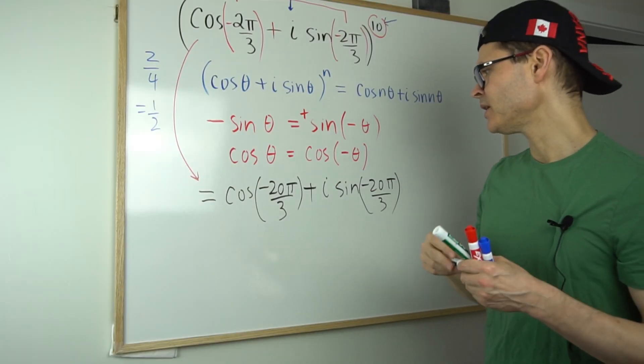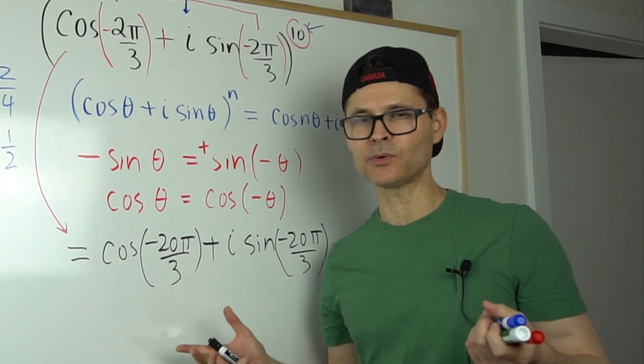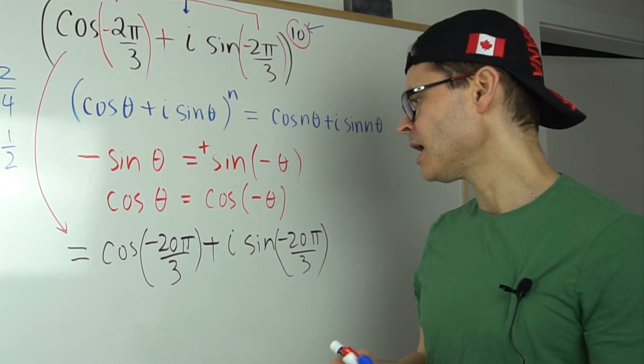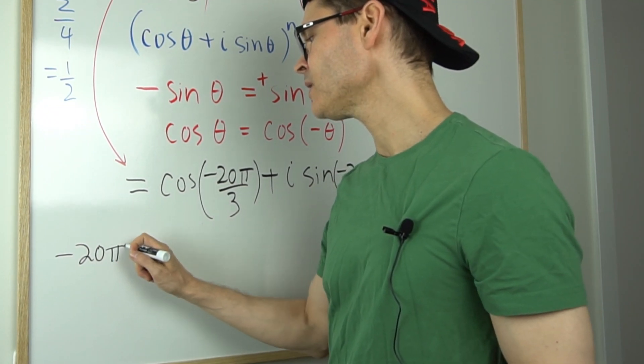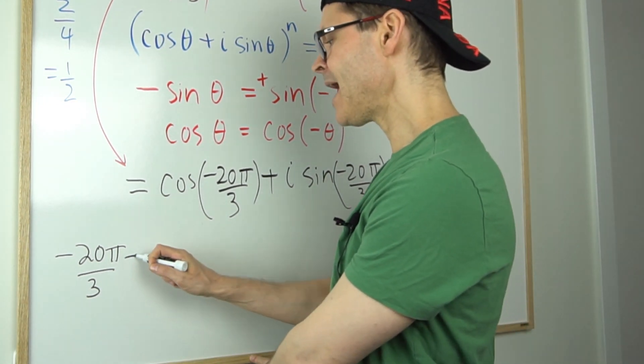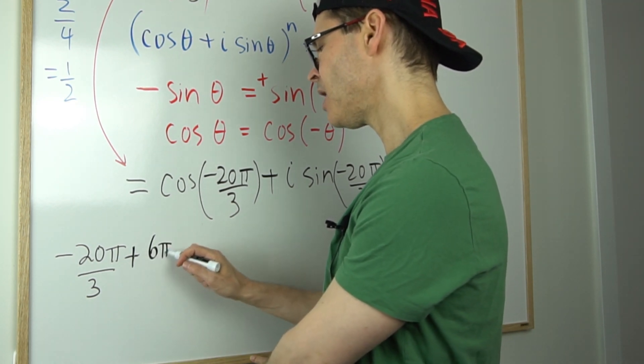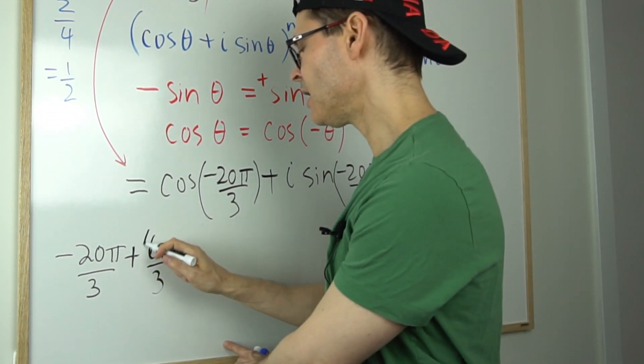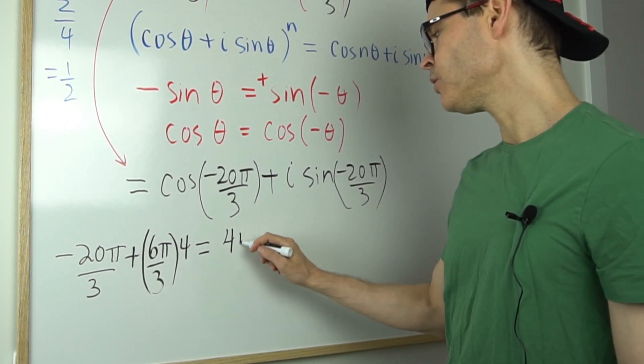And now is there any way I can distill that down? Well, of course I can, because that's the cosine of an angle. Look, the denominator is 3. So it looks like it's a multiple of π over 3. If I was to take negative 20π over 3, maybe I'll just go for the principal angle or the smallest positive by adding multiples of the period, which is going to be 6π over 3. 2π is one rotation. Maybe I'll add that four times and that's going to give me 4π over 3.